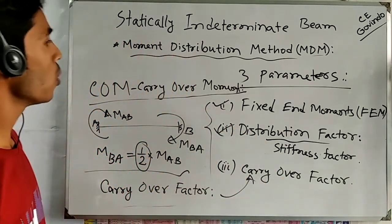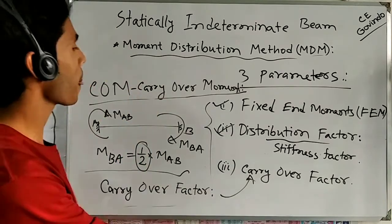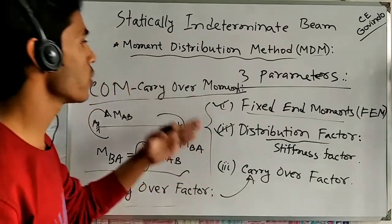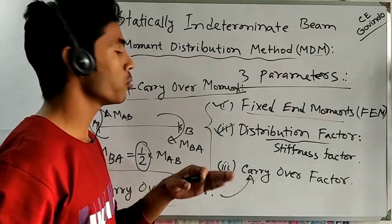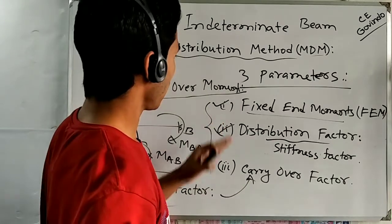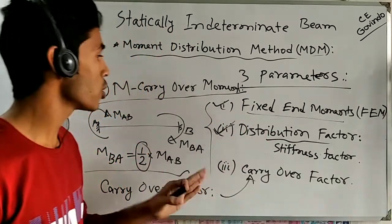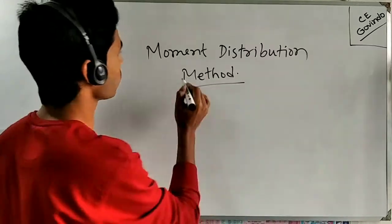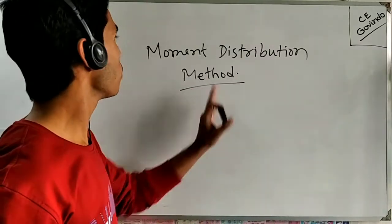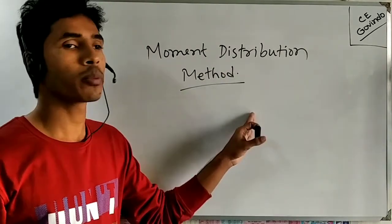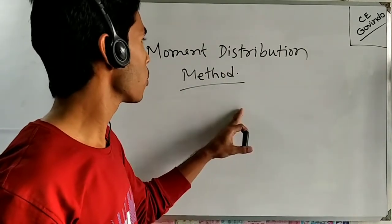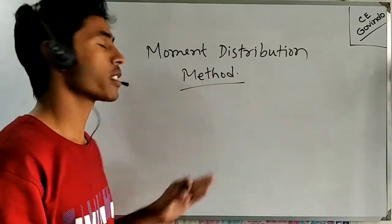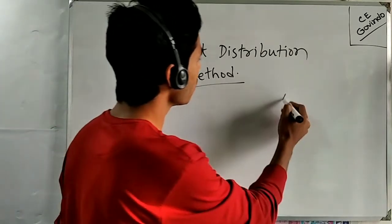Now we know all the parameters of the Moment Distribution Method: Fixed End Moments (found using formulas), Distribution Factor (used to distribute moments), and Carry Over Factor (used for further distribution). This concludes the first part of the Moment Distribution Method lecture. In the second part we are going to solve an example problem, which should make all these concepts clearer.